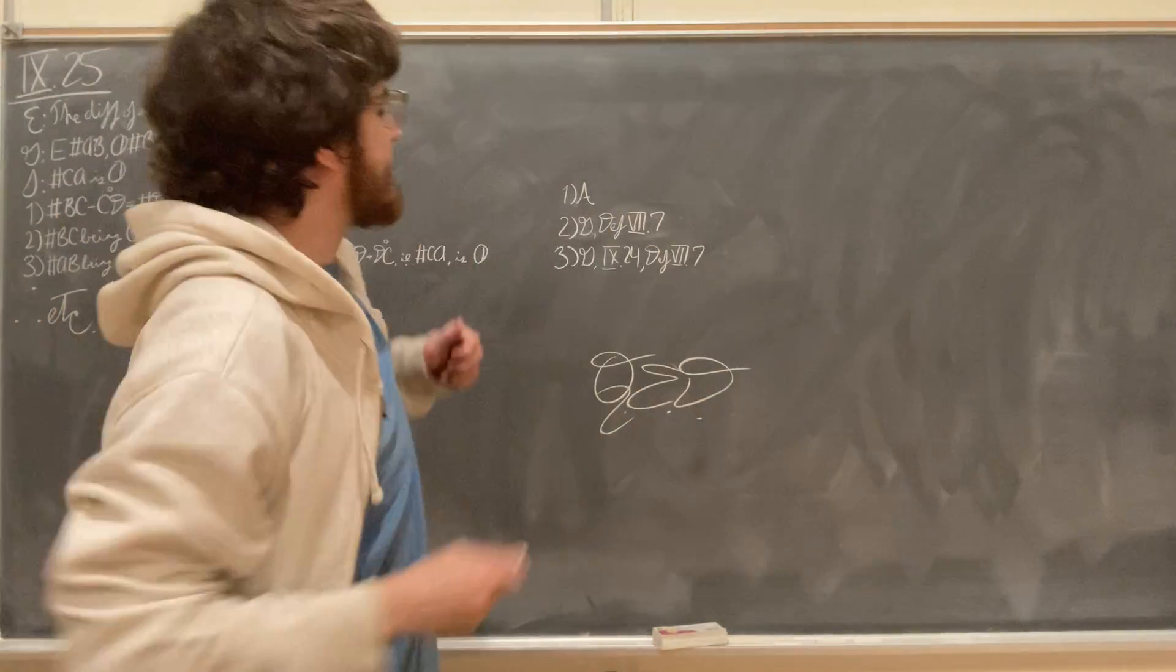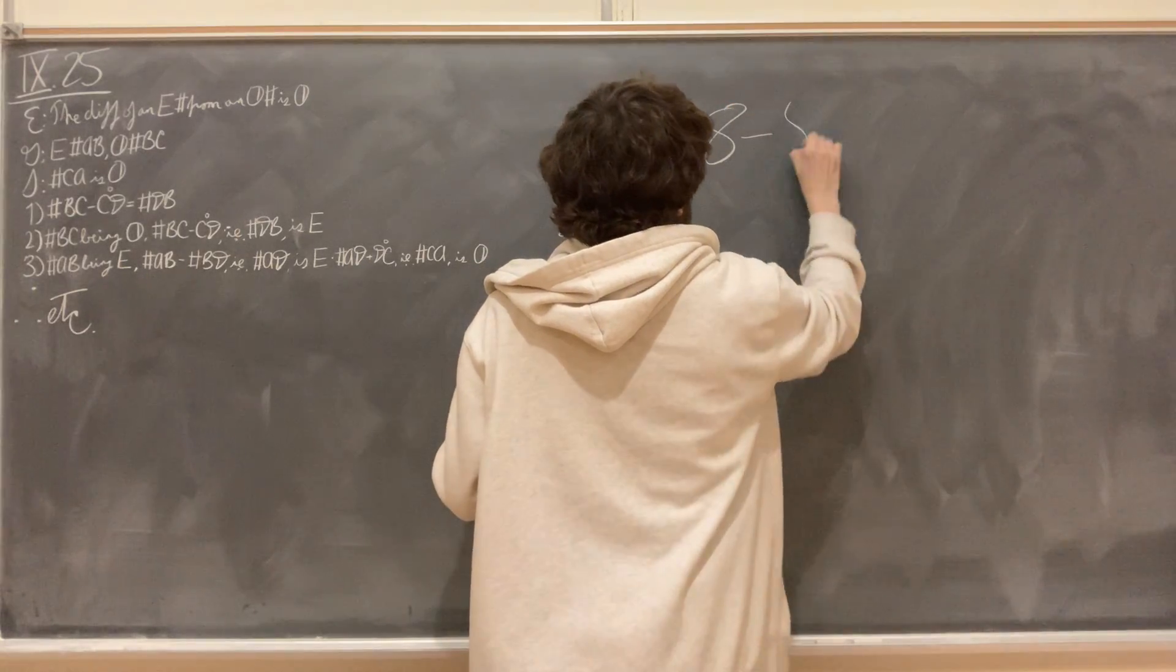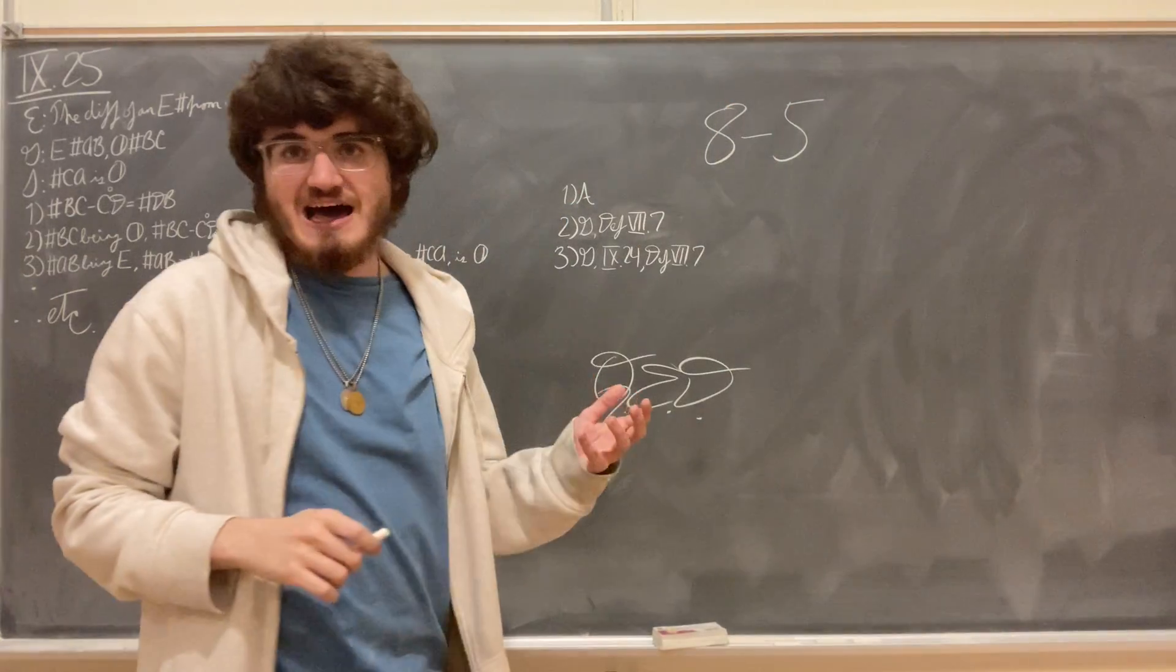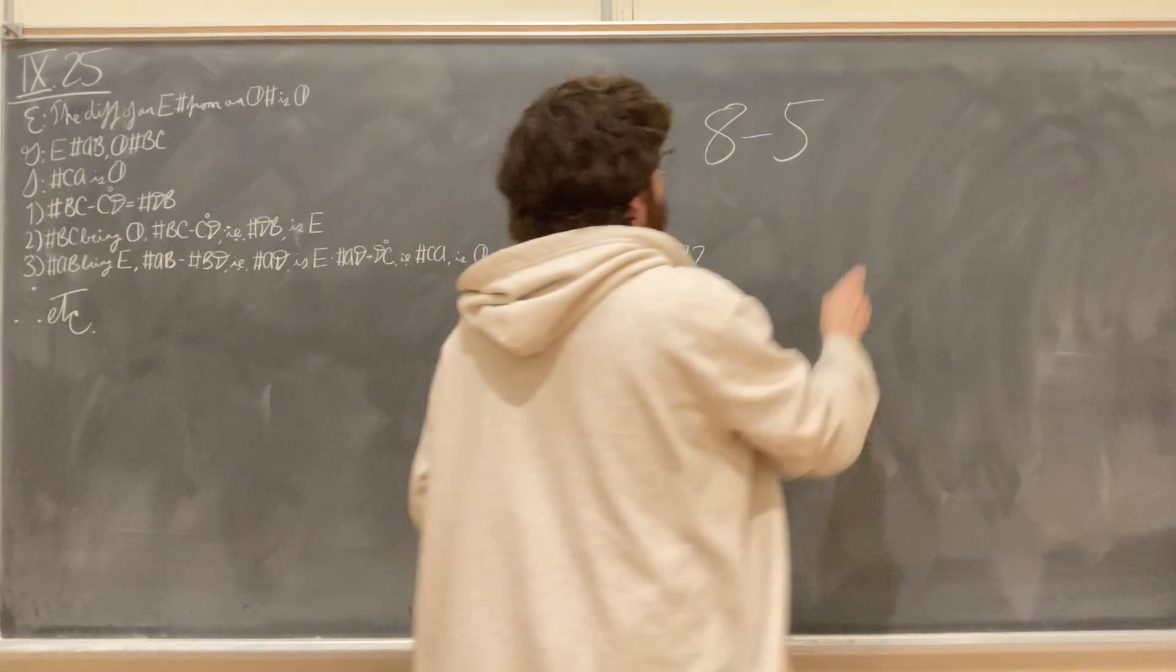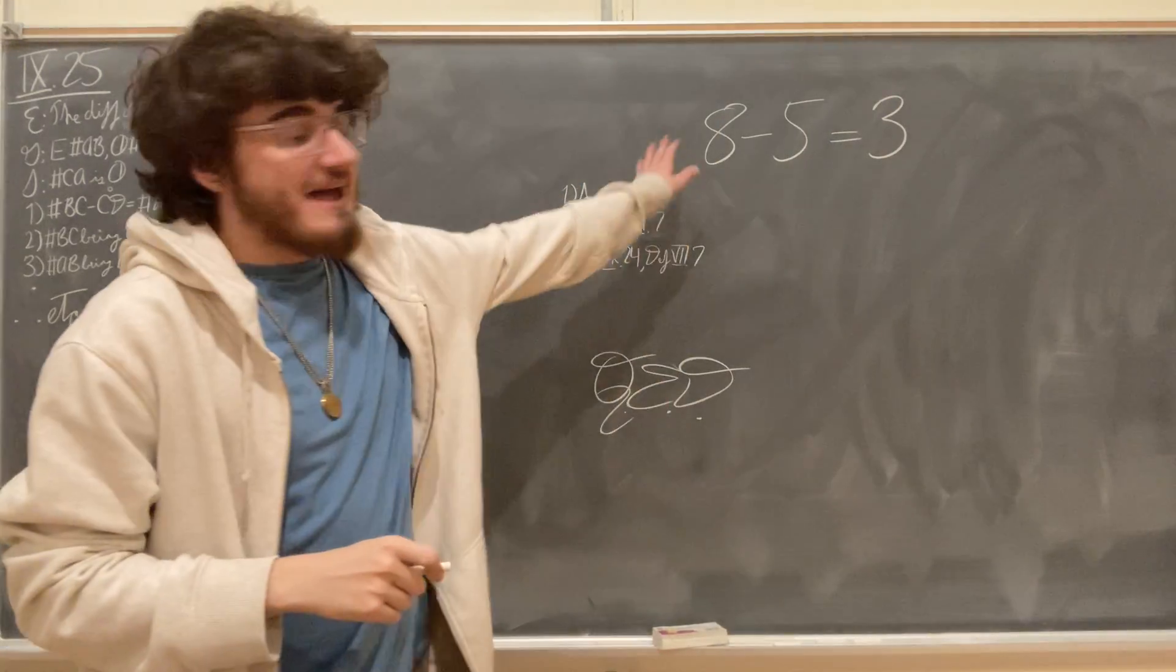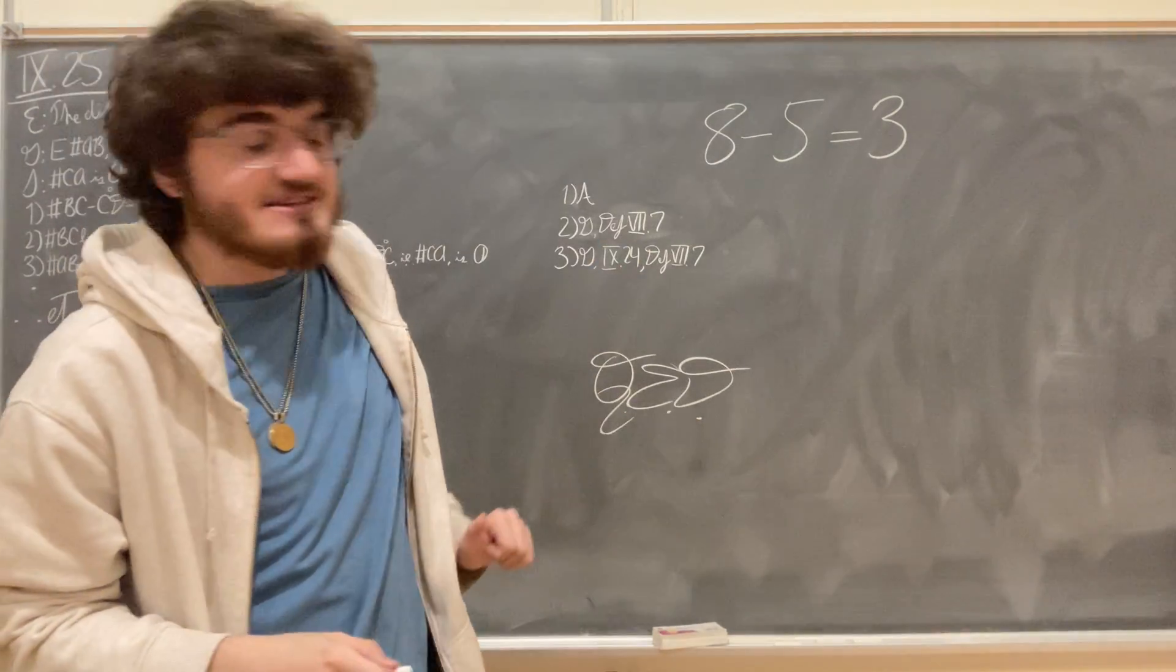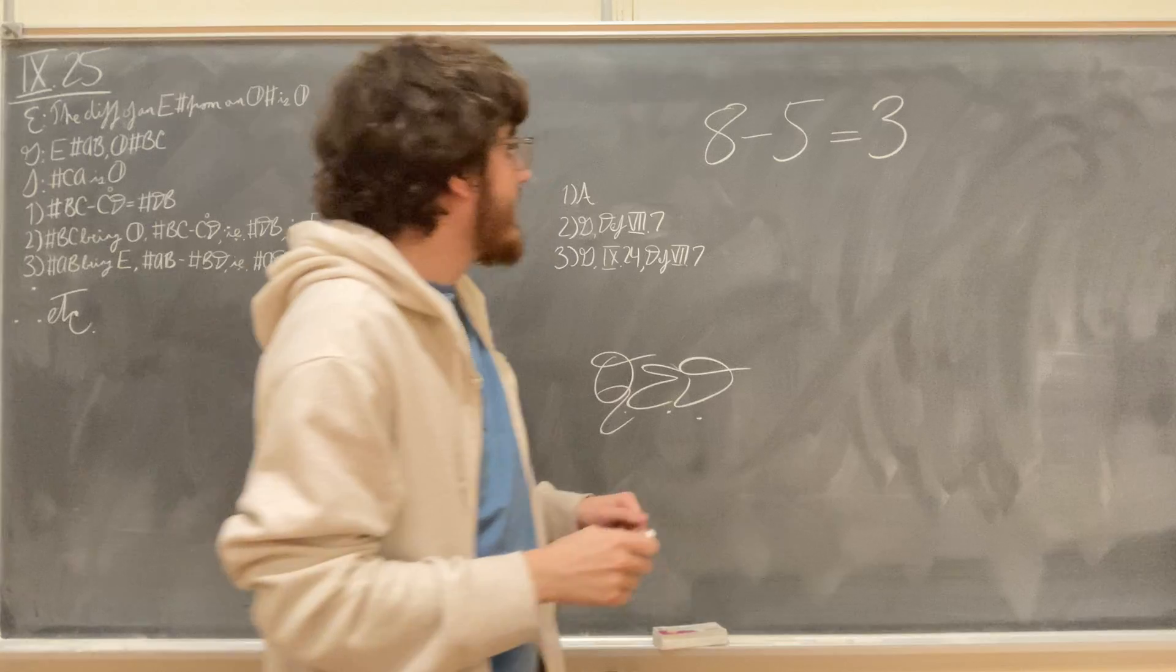Just to give an example of what this proposition would look like if we have 8, which is an even number, minus 5, which is an odd number, I hope we can all agree to that, we'll get their difference, which is the number 3. So because 8 is even and 5 is odd, this proposition is going to tell us that 3 is also odd.